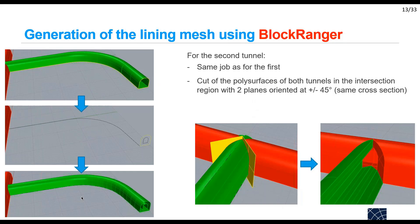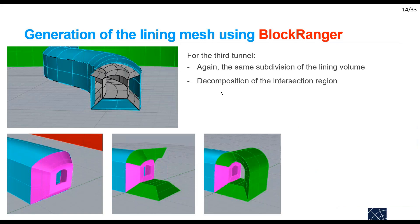For the second tunnel I do almost the same job: I generate the inner surface, split the lining volume into bricks, and also add two planes in the intersection region to cut the polysurfaces and guarantee connectivity between the different blocks representing the lining. For the third tunnel I do the same, decomposing the intersection region accordingly. In this case one part that was previously one brick is cut into two blocks due to the two tunnels having different cross sections.